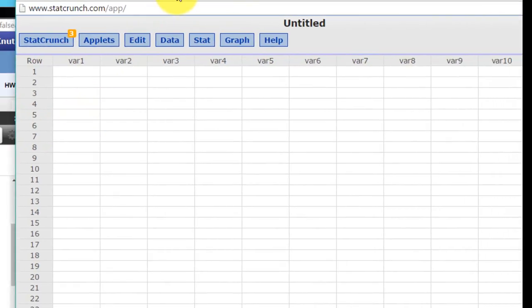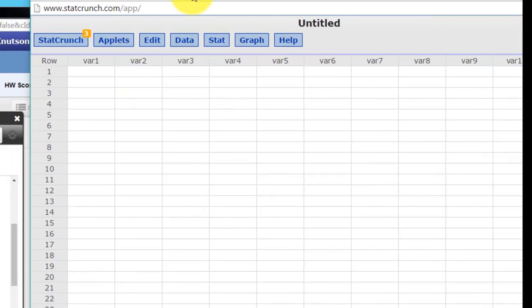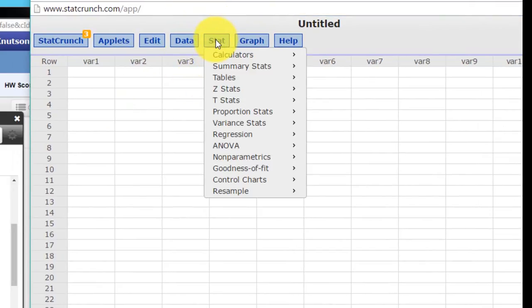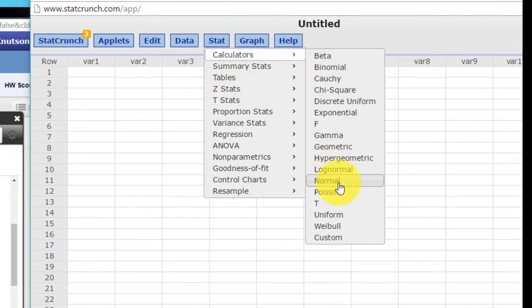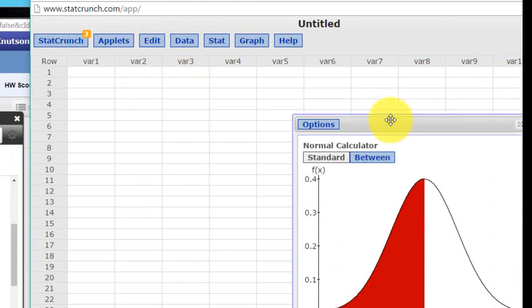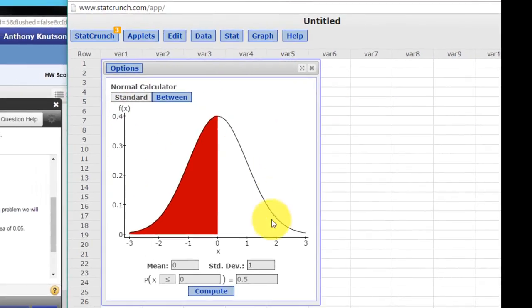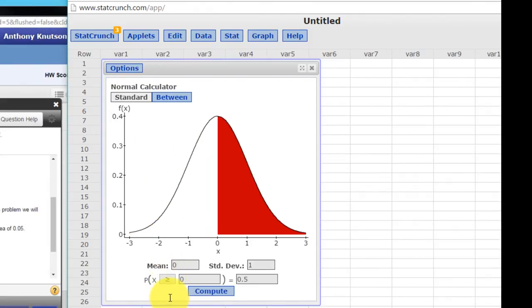Once you get StatCrunch open we just go to Stat, calculators, normal, bring up this standard normal curve. I'm going to use the upper end just to be consistent, and all we need to enter in there is the alpha over 2, 0.05.